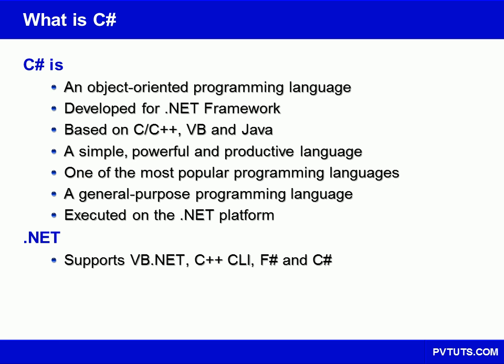Like the other .NET languages, C-sharp is initially compiled to an intermediate language. This language is called the Common Intermediate Language, or CIL, and is run on the .NET framework. A .NET program will therefore be able to execute on any system that has that framework installed.